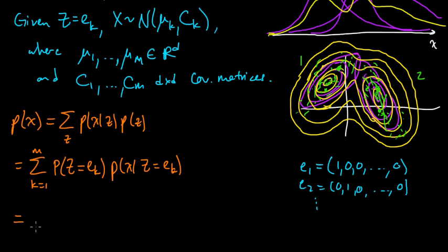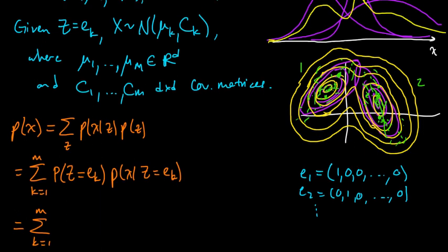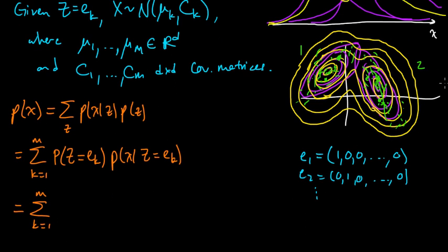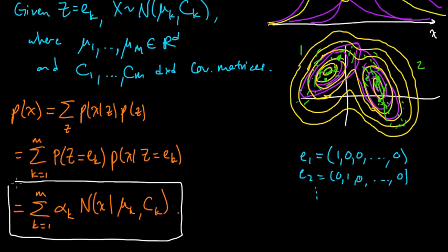z, and z can take m possible values. So we could write this as a sum as k goes from 1 to m of the probability that z equals ek times the probability of x, the density of x given that z equals ek. And that's a normal. So let me put it this way first. And then let's write what that means. So this is the sum, the probability that z equals ek, we said was this alpha k parameter. So this is alpha k times the normal density function evaluated at x with parameter mu k and Ck, mean mu k and covariance Ck. So this is the density function of a mixture of Gaussians. And it's just what we said earlier, right?